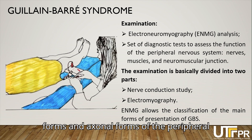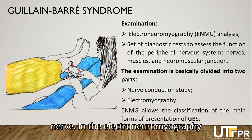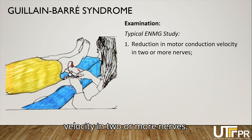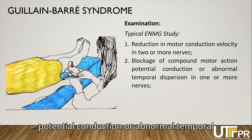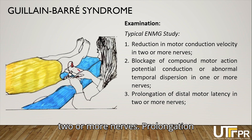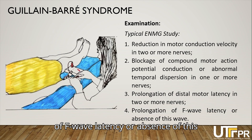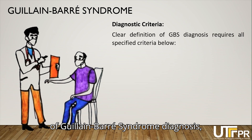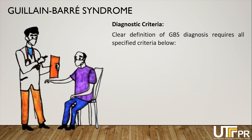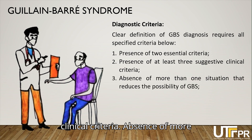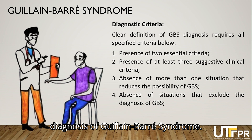Electroneuromiography allows classification of the main forms of Guillabar Syndrome, differentiating between demyelinating and axonal forms of the peripheral nerve. In the examination, the following will be analyzed: reduction of motor conduction velocity in two or more nerves; blockage of compound motor action potential conduction or abnormal temporal dispersion in one or more nerves; prolongation of distal motor latency in two or more nerves; and prolongation of F-wave latency or absence of this wave. Several diagnostic criteria have been proposed, requiring: presence of two essential criteria; presence of at least three suggestive clinical criteria; absence of more than one situation reducing the possibility of Guillabar Syndrome; and absence of situations excluding the diagnosis.